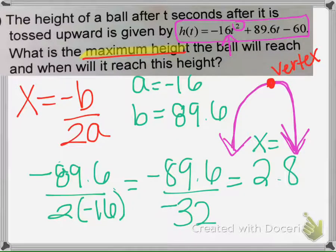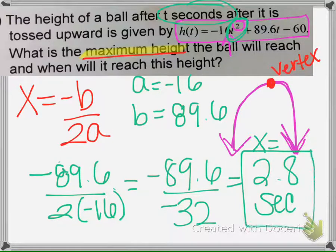The problem says the height after t seconds, so x represents time t. This means 2.8 seconds, so the maximum height will be reached at 2.8 seconds.